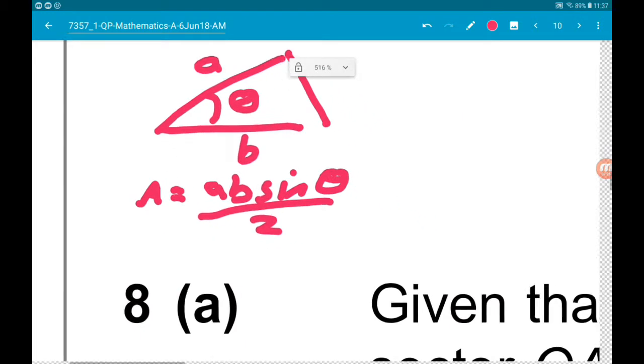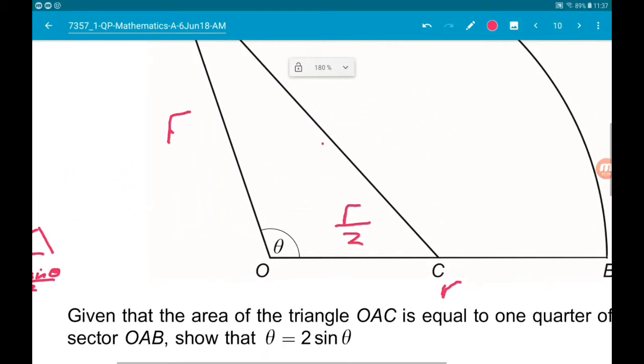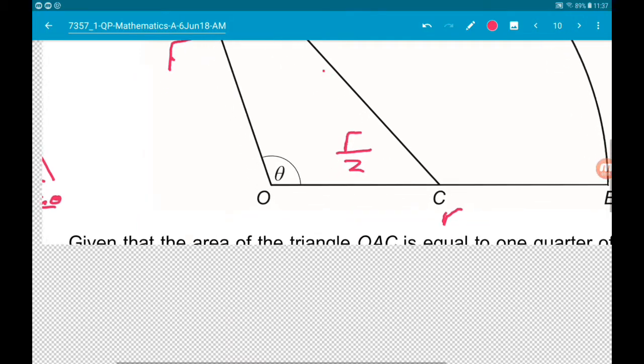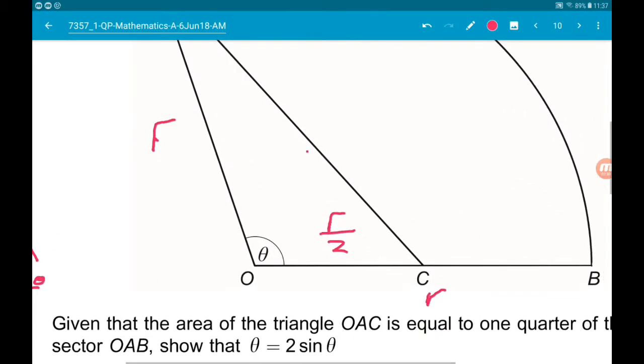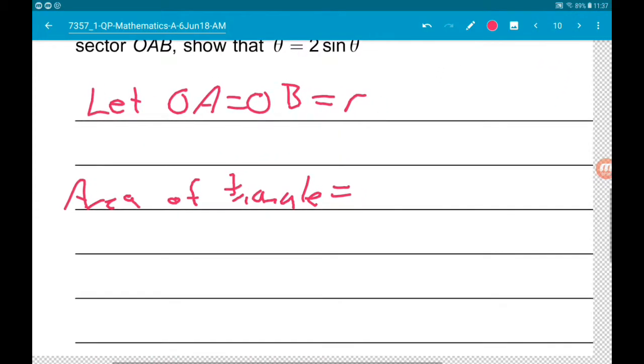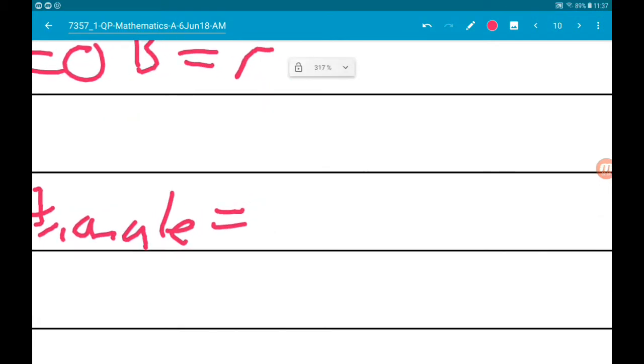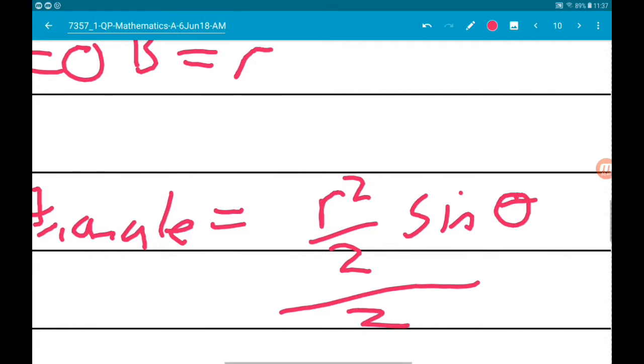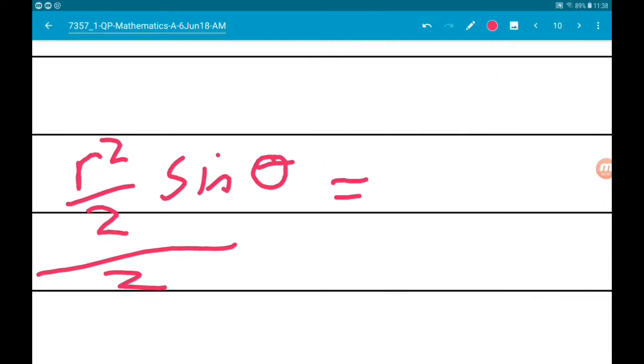So, the area of this triangle is going to be R squared over two, sin theta, all over two, which is R squared, sin theta, all over four.